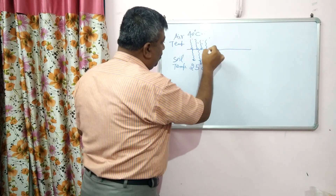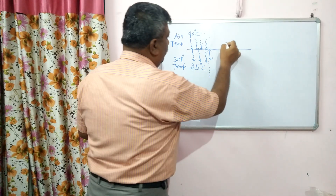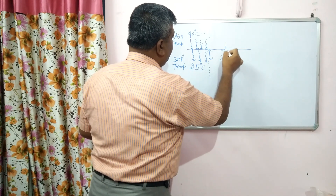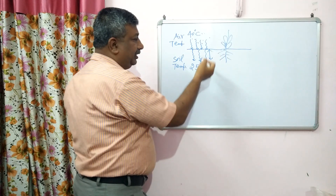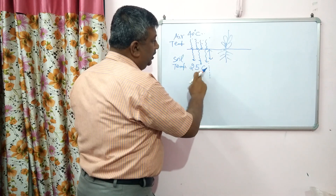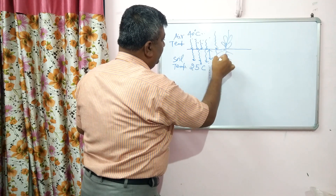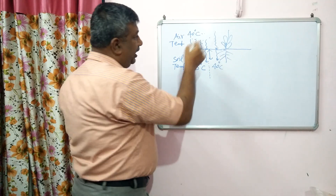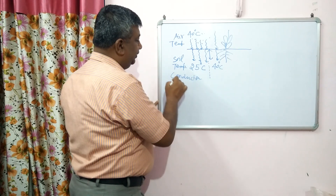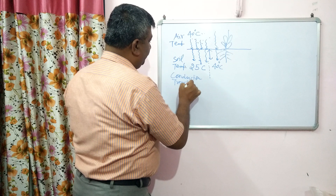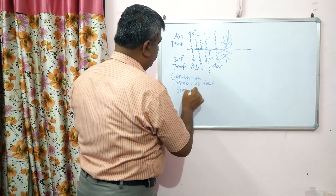This heat transfer on the upper surface is very fast and then becomes less as depth increases. But in the root zone — suppose this is the crop and this is the root — the roots which were facing low temperature now experience 40 degrees centigrade because of conduction of heat from air into soil.